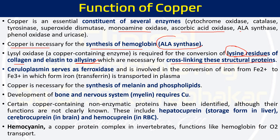Ceruloplasmin serves as a ferrooxidase and is involved in the conversion of Fe2+ to Fe3+. In this Fe3+ form, iron binds with transferrin and is transported in the plasma. So ceruloplasmin is required for the transportation of iron into the plasma. Copper is also necessary for the synthesis of melanin — tyrosinase requires copper and is responsible for melanin synthesis. Copper is also essential for the development of bone and the formation of myelin fibers in the nervous system.